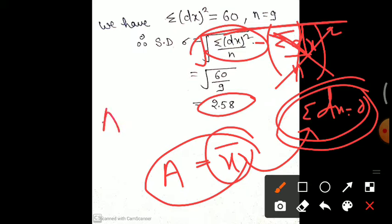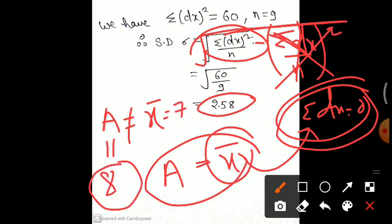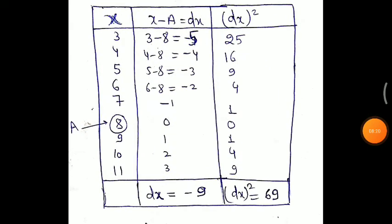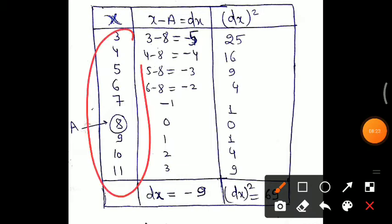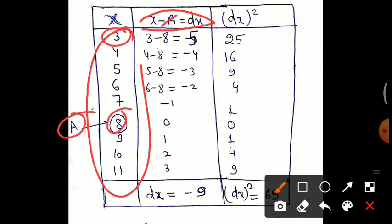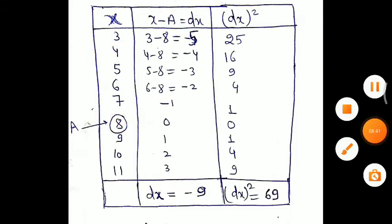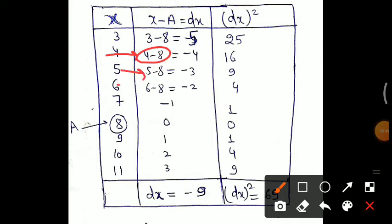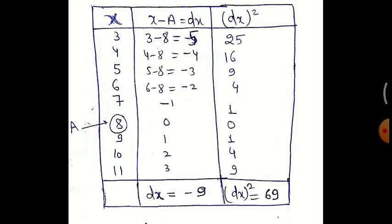Our mean value is 7 but I am using assumed mean a equals 8, and then solving the question. I want to show that even with a equals 8 you get the same answer. So now dx equals x minus a equals x minus 8. That gives: 3 minus 8, 4 minus 8, 5 minus 8, 6 minus 8, 7 minus 8, 8 minus 8, and so on, giving dx values for each x.